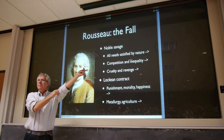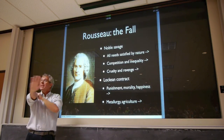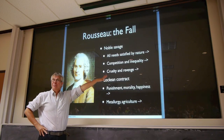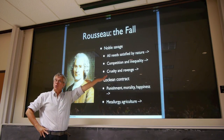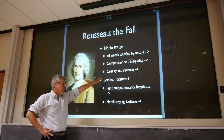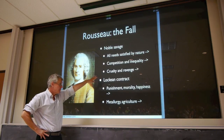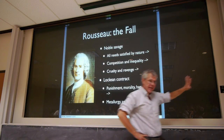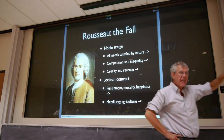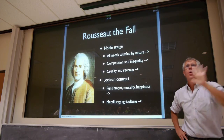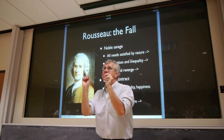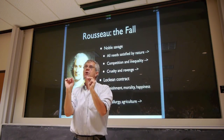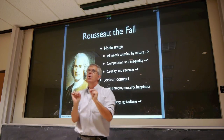But then people start competing. There's a certain amount of natural inequality, they get mean. His picture of the state of nature quickly devolves into something like the middle school cafeteria. Then we would establish some rules, as Locke says, and that would work for a while. But he says, as soon as metallurgy and agriculture enter the scene, we're in trouble.